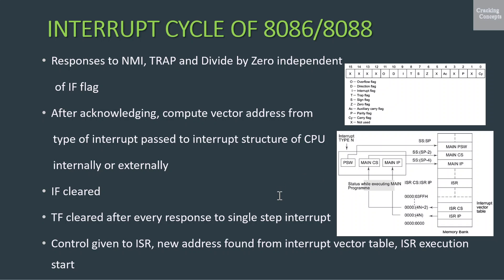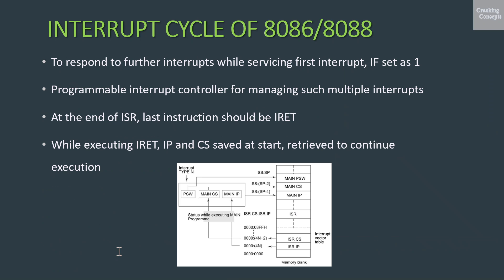Control is then transferred to the interrupt service routine to serve the interrupting device. The new address of the ISR is found from the interrupt vector table, and execution of the ISR starts. If further interrupts are to be responded to during the time the first interrupt is being served, the interrupt flag should be set to 1 by the ISR of the first interrupt. If the interrupt flag is not set, subsequent interrupt signals will not be acknowledged by the processor until the current one is completed. The programmable interrupt controller is used for managing such multiple interrupts based on their priorities.